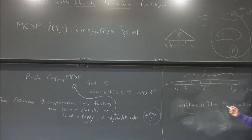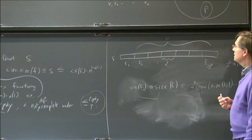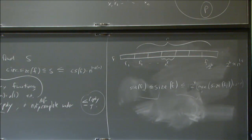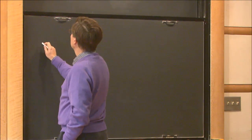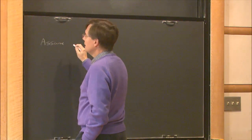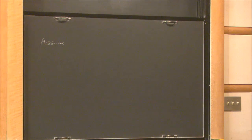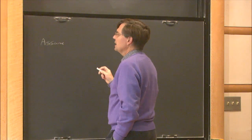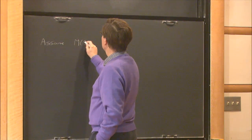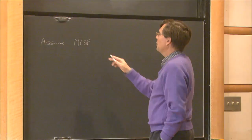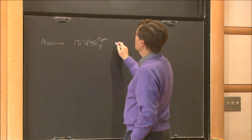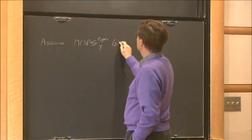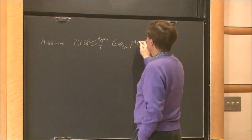This doesn't look like a great approximation ratio, but it's going to be good enough for us. Assume not only is this not going to be NP-complete — we're not even going to be able to reduce MCSP to it. So assume that MCSP, the problem with no approximation, is P-poly Turing reducible to this gap problem, gap-epsilon(N)-MCSP.